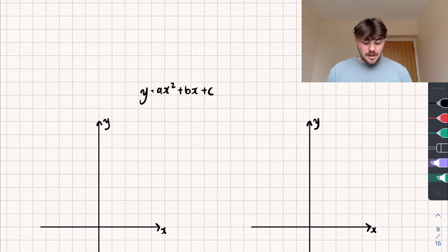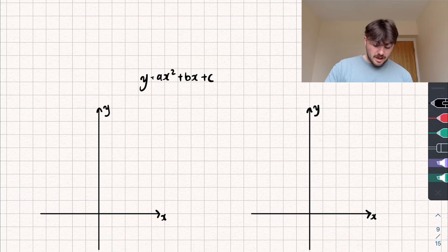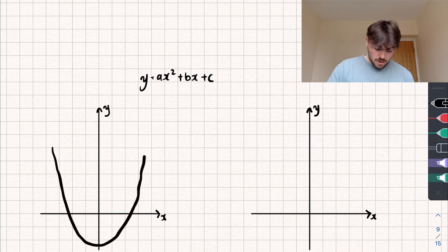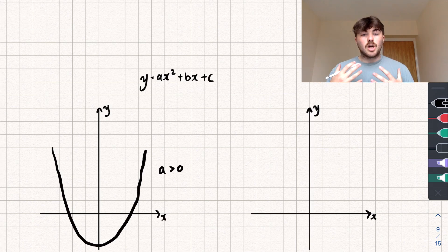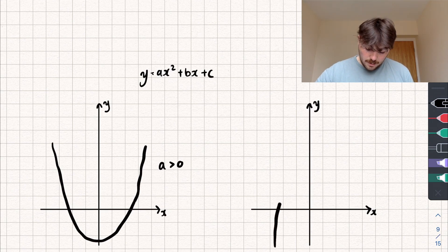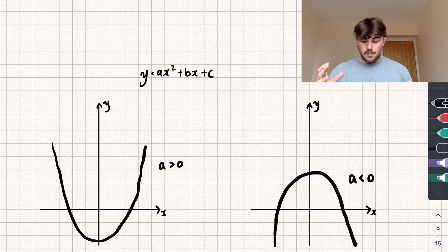If our value of a — the coefficient of x squared — is greater than zero, so it's positive, then the shape of our quadratic graph is going to be a U-shape. If, however, our value of a is negative, then the shape of our graph is going to be an n-shape. So that's the first thing we need to be aware of.